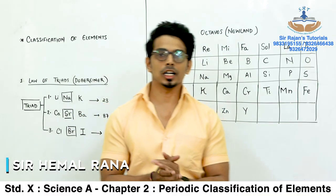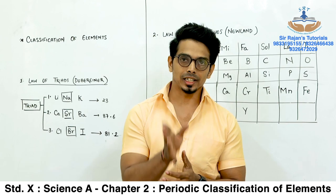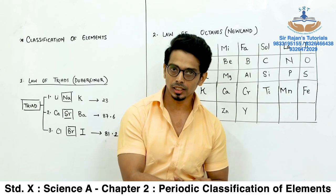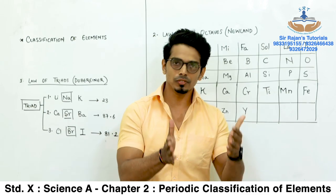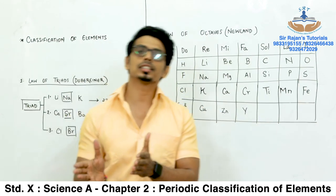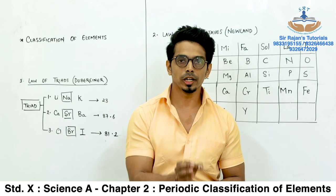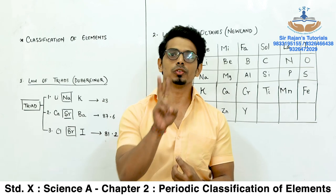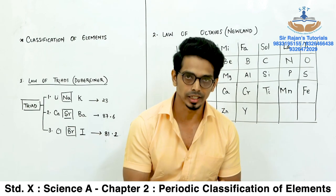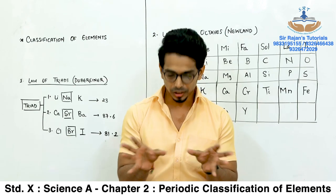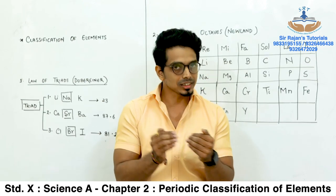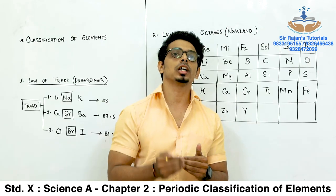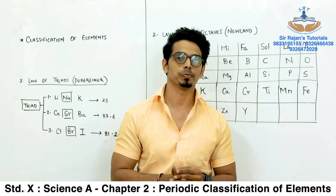Students, we are going to start with your first chapter in your science section A. We have two sciences this year: science section A and section B. Science section A will cover chemistry and physics, whereas science section B will cover biology. We are going to start with the second chapter, which is periodic classification of elements. We have already done some of this in your 8th and 9th standard, so with that basis we are going to start with your 10th standard second chapter.